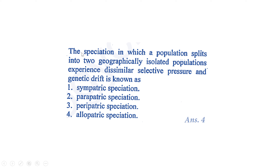Next: speciation in which a population splits into two geographically isolated populations experiencing dissimilar selective pressures and genetic drift is known as – sympatric speciation, parapatric speciation, or allopatric speciation. Since the two populations split geographically, the right answer is option 4 – allopatric speciation.